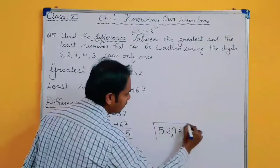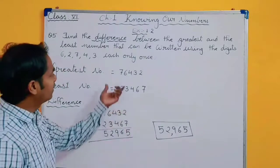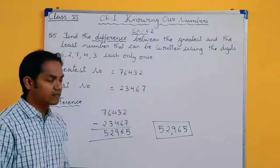52,965. This is the difference between the greatest and the least number.